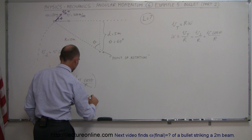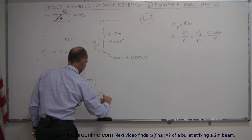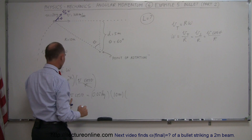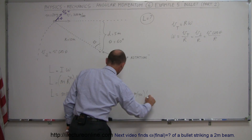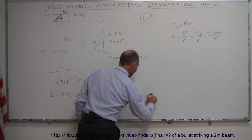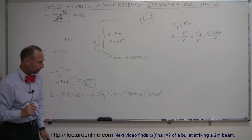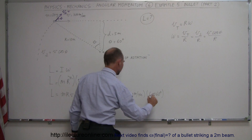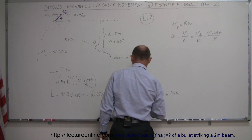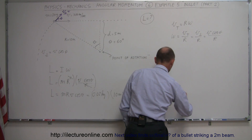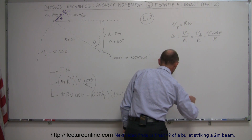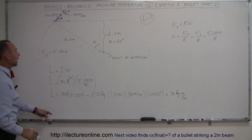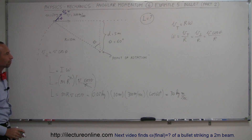In this case, that would be the mass of the bullet, which is 0.02 kilograms, times the radius of 10 meters, times the velocity of 300 meters per second, times the cosine of 60 degrees. The cosine of 60 is one-half, so that gives us 0.01 times 10, which is 0.1, times 300, equal to 30 kilogram·meters squared per second. And that is how you find the angular momentum of a bullet at any position along a straight path relative to a point of rotation.